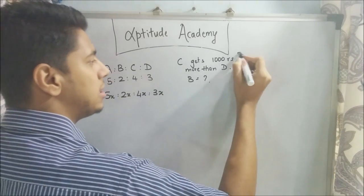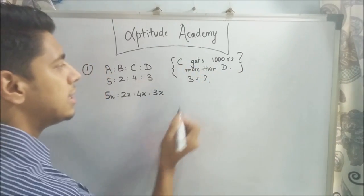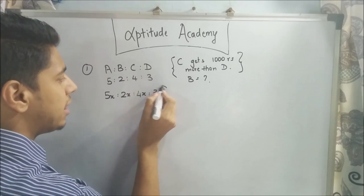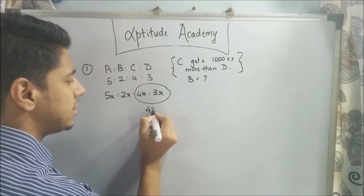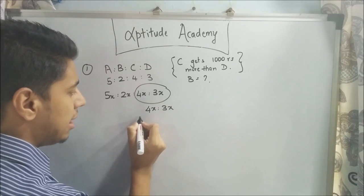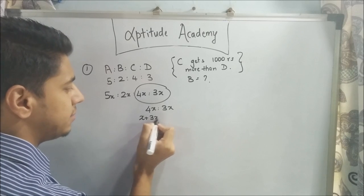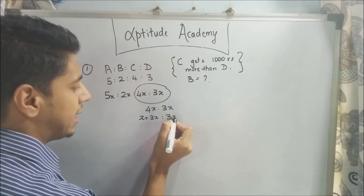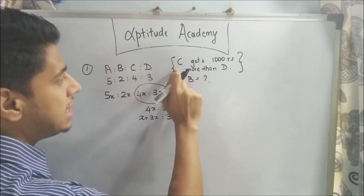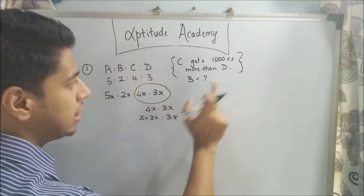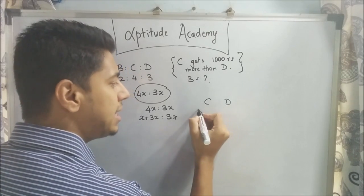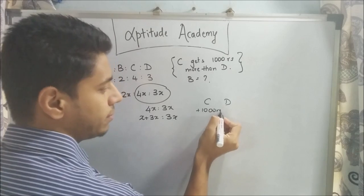The main statement is: C gets 1000 rupees more than D. The ratio of C to D is 4x:3x, or you can write it as (x + 3x):3x. I've broken down 4x as x + 3x. C and D get the same amount, but C gets 1000 rupees more.